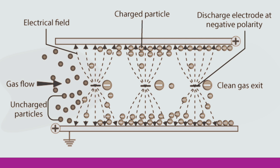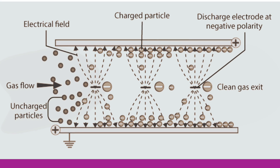A high voltage system provides power to the discharge electrode to generate an electrical field. The particulate entrained in the gas is charged while passing through the electrical field. The particulate is then attracted to the grounded collector plate and forms a dust layer on the plate.